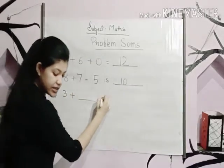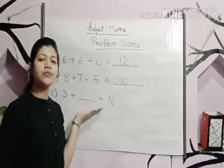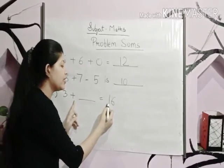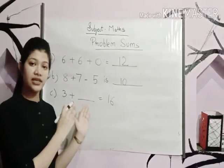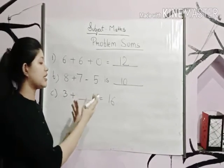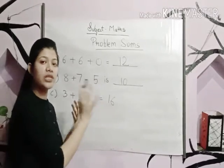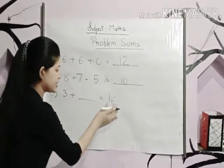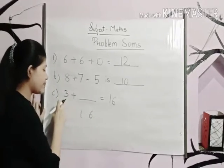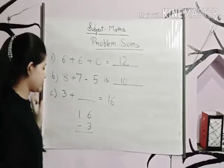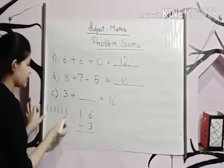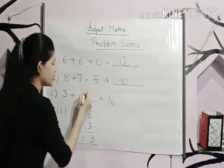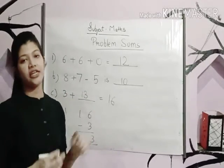Question C: three plus dash is equal to sixteen. Whenever a question has a plus sign and a missing number, we subtract the given number from the answer. So sixteen minus three — ones: six lines, cut three, three left; copy the one — answer is thirteen. You can check: three plus thirteen is equal to sixteen.